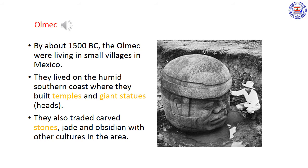Olmec. By about 1500 BC, the Olmec people in Mexico were living in small villages. The Olmec lived on the humid southern coast of the Gulf of Mexico, where they built temples and giant statues. They also traded carved stones like jade and obsidian with other cultures in eastern Mexico.